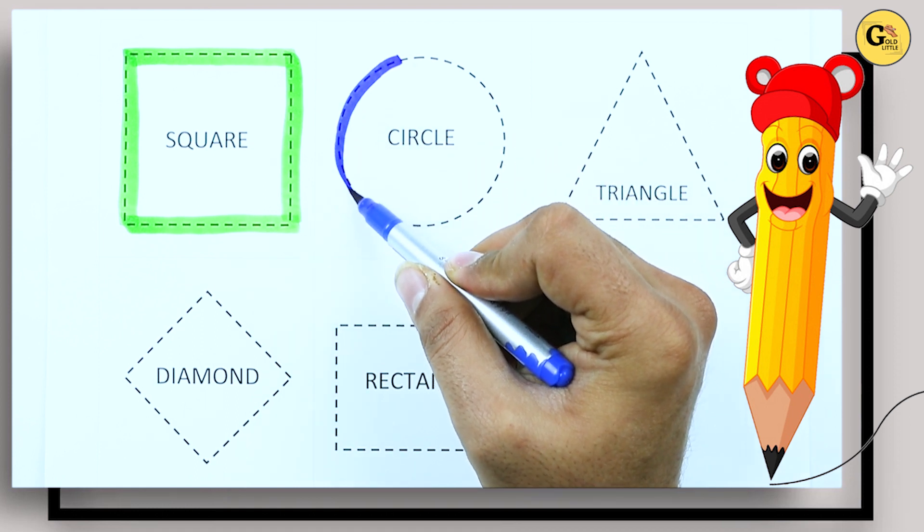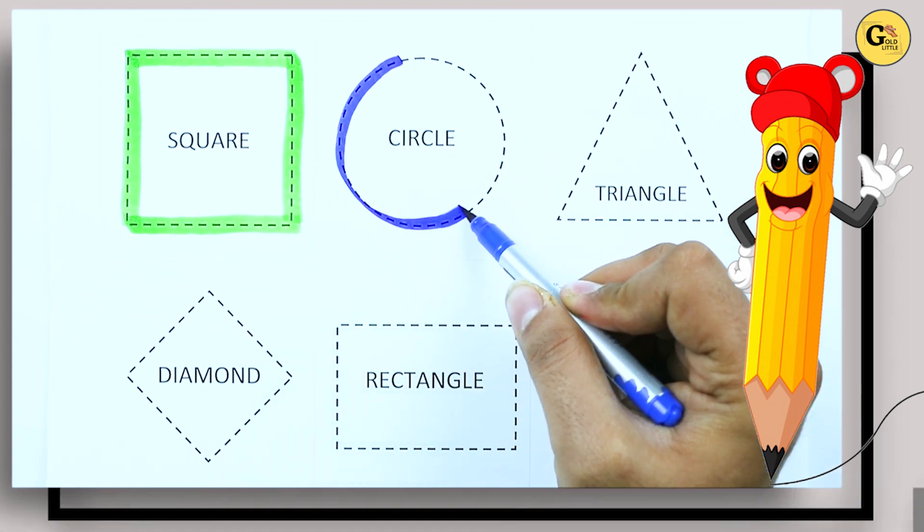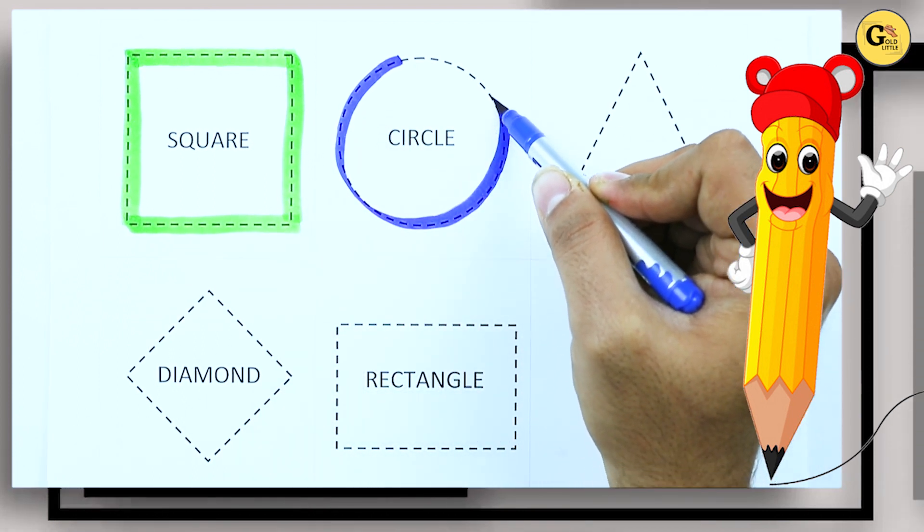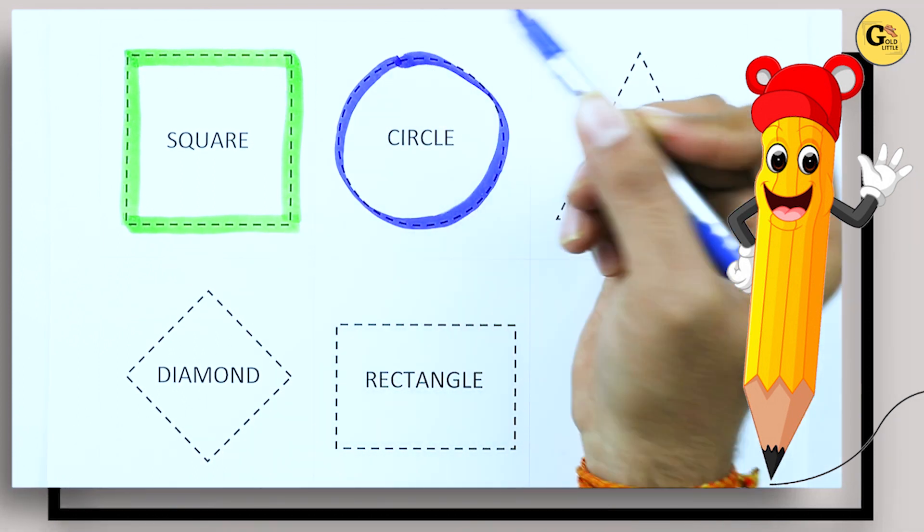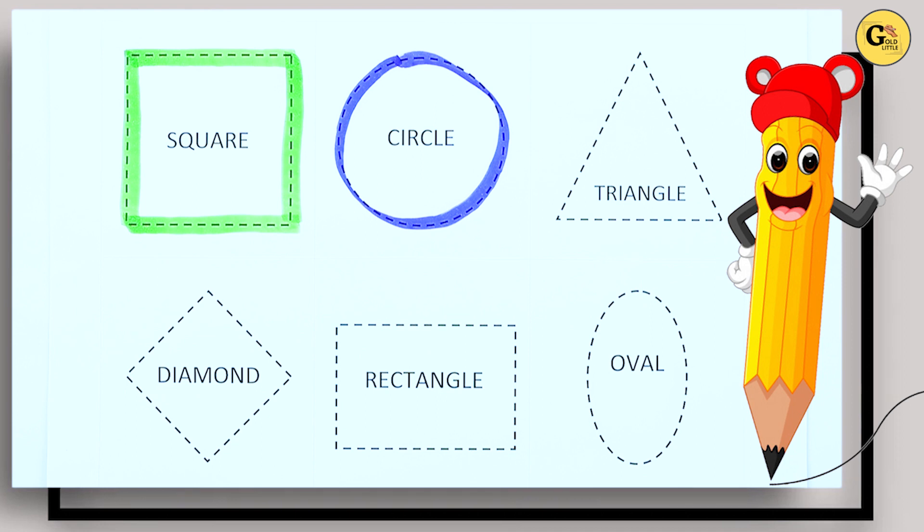Circle — round, round, round, round. It's a circle with blue color.